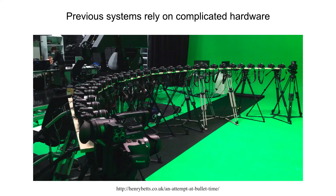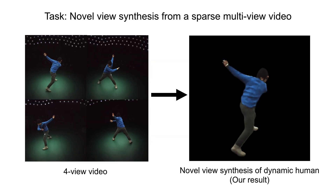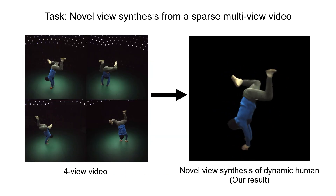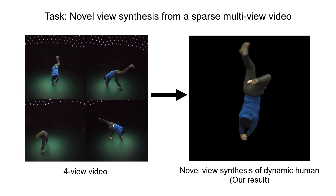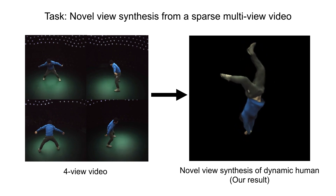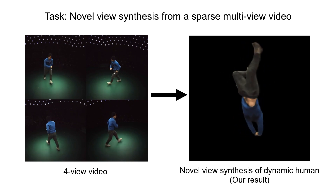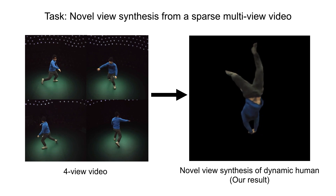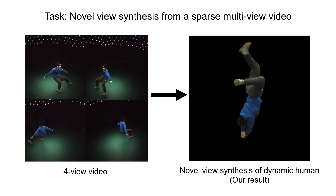Previous systems mostly rely on a dense array of cameras for novel view synthesis, which makes them expensive and only applicable in constrained environments. Our task is to perform novel view synthesis of a moving human from a sparse multi-view video. The left is a four-view video of a performer, and the right is our generated free viewpoint video.